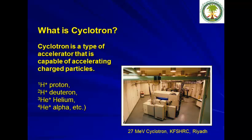So what are cyclotrons? A cyclotron is a type of particle accelerator capable of accelerating charged particles. These charged particles can be protons, deuterons, helium particles, or alpha particles. This is a picture of our cyclotron — a 27 MeV cyclotron installed at King Faisal Hospital in Riyadh in 1979.